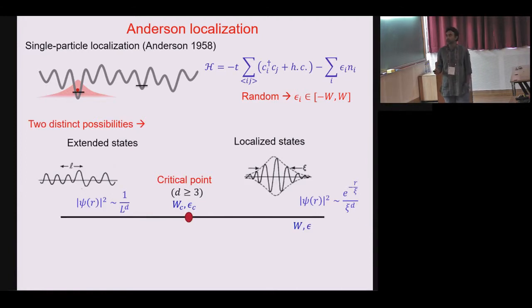As Anderson shows there could be two distinct possibilities, of course depends on dimension. For some weak strength of disorder you would have states which are extended or it could be localized. Now depending on dimension and symmetry class you could have transition or not, for example in three dimension you could have a critical point.